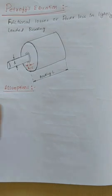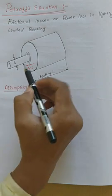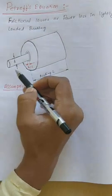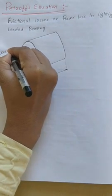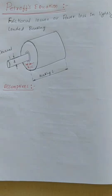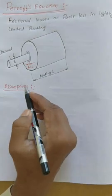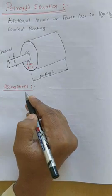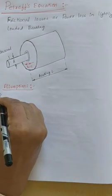To start with, let us consider a lightly loaded journal bearing. We can consider a full journal bearing with a journal — a journal rotating concentrically with respect to the bearing. This journal runs concentrically with the bearing under certain assumptions. The assumptions that we make while deriving Petroff's equation are as follows.